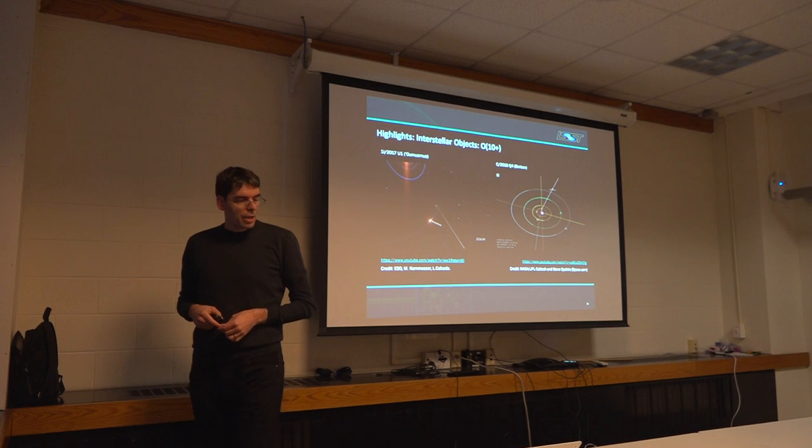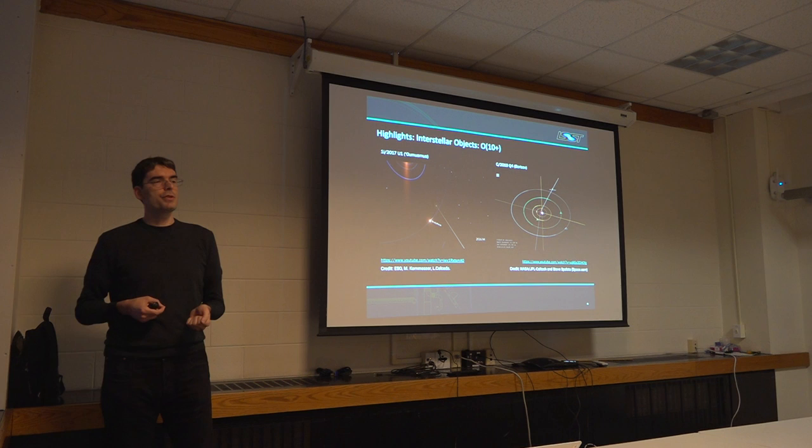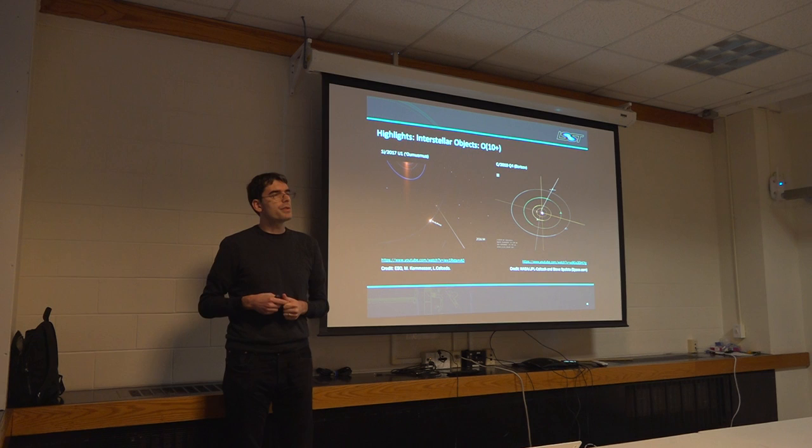And the interstellar objects, we're redoing some of these estimates. But if we don't find at least one per year, it puts an interesting constraint. If these two objects that were discovered over the last two years are an indication, there are going to be a few of these per year. So this is going to be really fun.